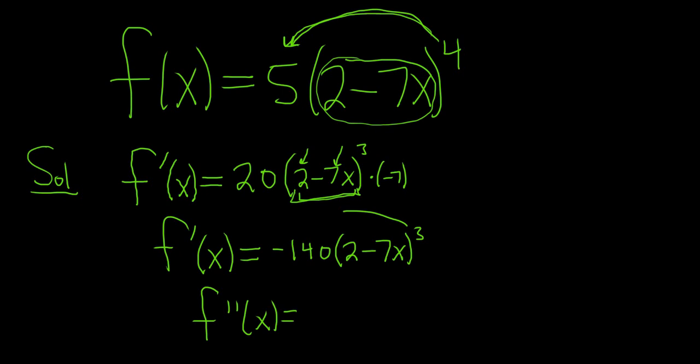So we have 3 times negative 140, which is negative 420, I believe. Then we have 2 minus 7x. We subtract 1, so we get 2, times the derivative of the inside function, which is, again, negative 7.